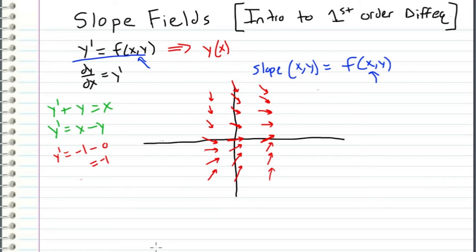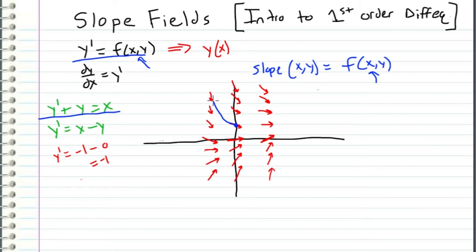We have just partially solved this differential equation. I can take any point along here and draw the actual solution to this equation, because we know what the slope of our unknown function is at each point. The actual function we are solving for is going to be tangent to each of these vectors. Coming in the negative x direction, the function lies tangent to each vector at the points we evaluated, and we could continue plotting vectors in both directions for a more accurate answer.